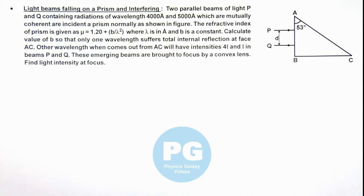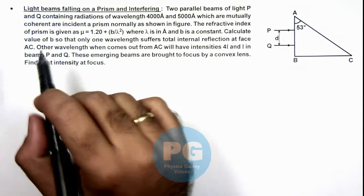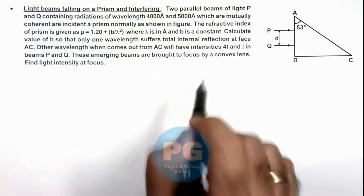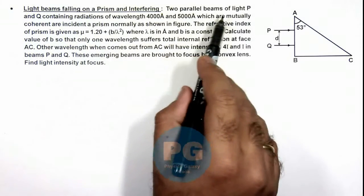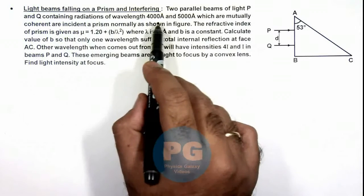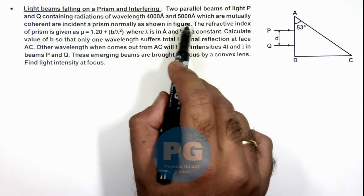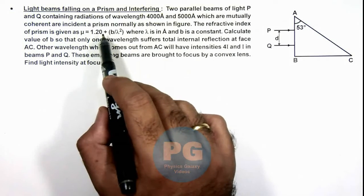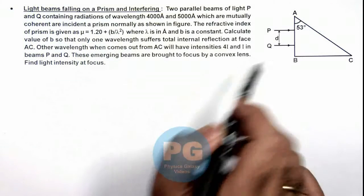In this illustration we'll analyze light beams falling on a prism and interfering. We are given two parallel beams of light P and Q containing radiations of wavelength 4000 and 5000 angstrom, which are mutually coherent or incident on prism normally as shown in figure.